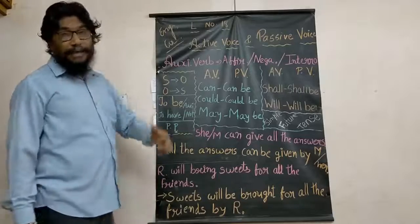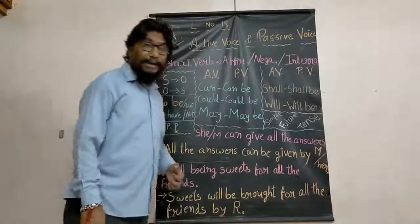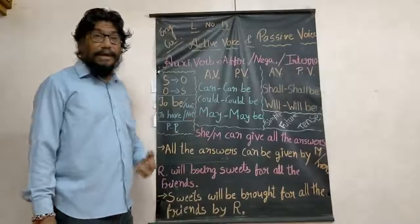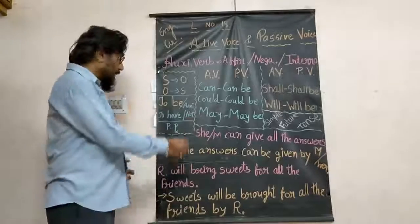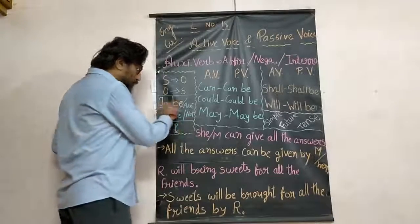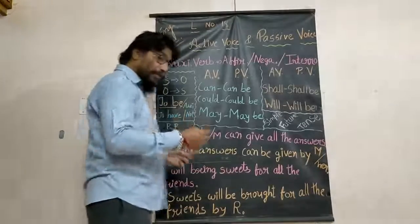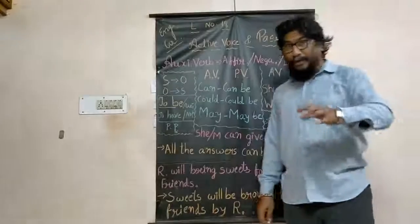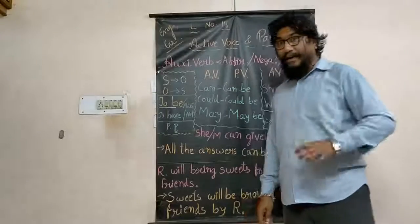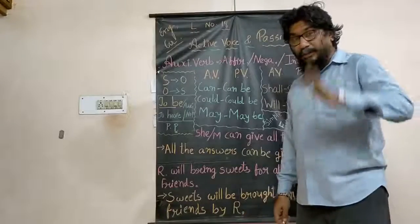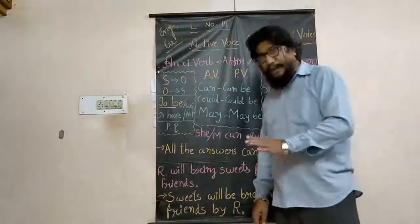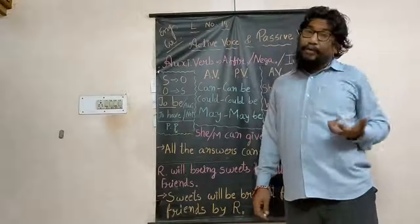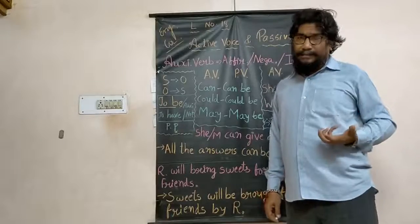Now there will be a question in your mind: auxiliary verbs are given, so how will we think for the 2B form according to the given tense? Because basically, whenever we are using an auxiliary verb, how will we determine the tense?